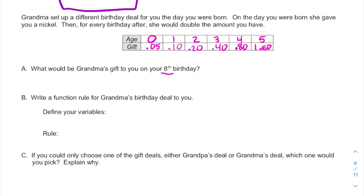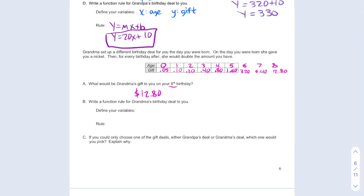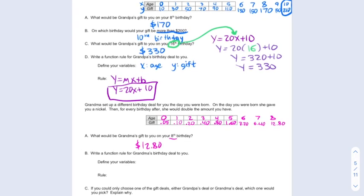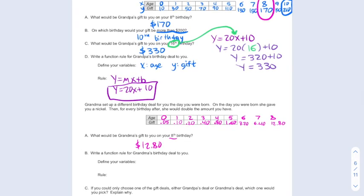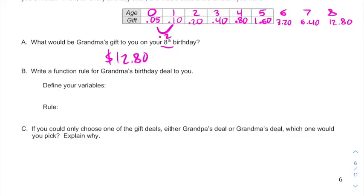Now for this eighth birthday, we could stretch this table out a little bit if we want, and it looks like our gift would be twelve dollars and eighty cents. Now remember, at the eighth birthday mark for grandpa, he was giving you a hundred and seventy dollars. So it seems right now like grandpa's giving us the better deal. Now this time we're multiplying by two each time to get to the next y. That makes this exponential.